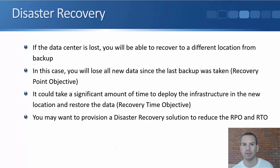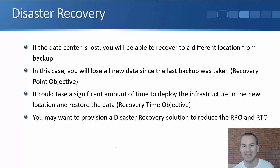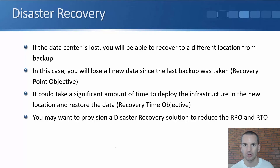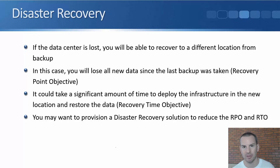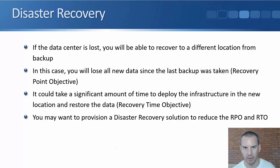Next, let's talk about disaster recovery. If the data center is lost, you'll be able to recover to a different location from those backups as long as they were stored off-site. In that case, you'll lose all new data since the last backup was taken — this is what we call RPO, the recovery point objective. RPO means: in the worst-case scenario, how much data could you lose if you have to restore to a different location? For example, if you're taking backups every night, your RPO would be 24 hours, because worst case the disaster occurs just before you take the next backup and all data written that day is lost.